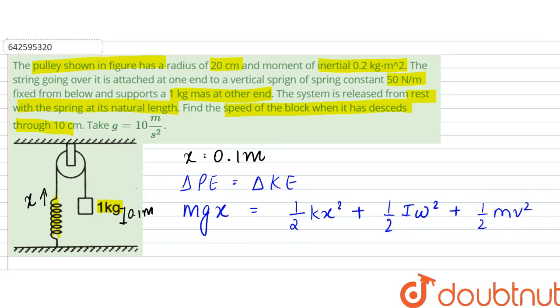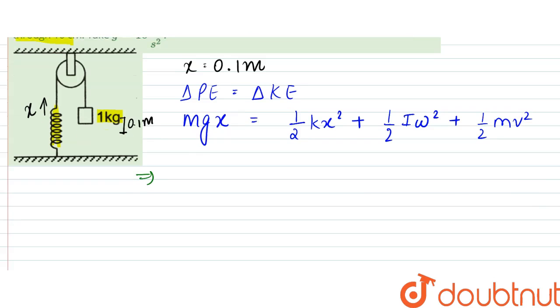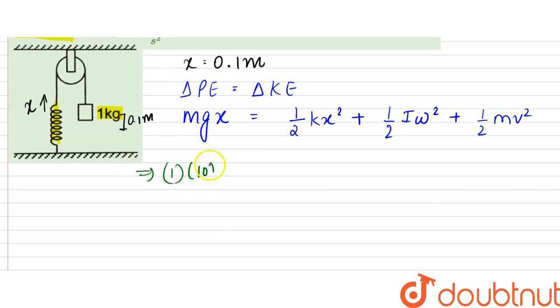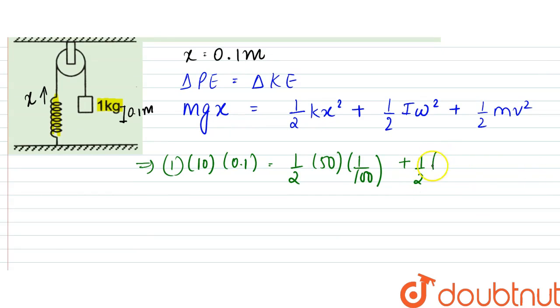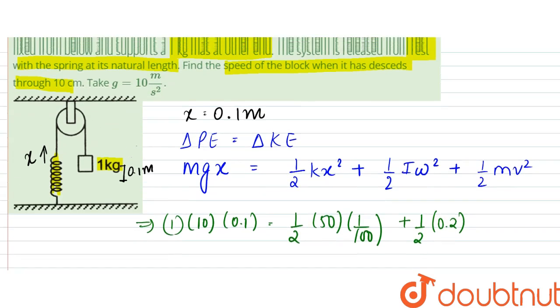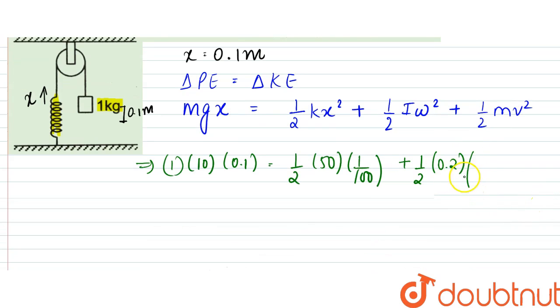When we substitute the values here, since mass is 1 kg, so 1 into 10 into 0.1 is equal to half into k is 50 into 0.1 square, that is 1 by 100, plus half I, so moment of inertia here is given as 0.2, so it is 0.2 here. And the radius is 20 centimeter, so omega square can be rewritten as v square by r square.